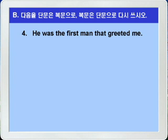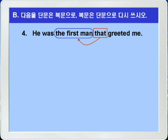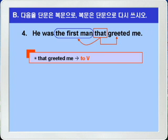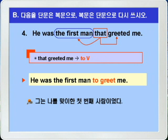4번. 'He was the first man that greeted me.' 그는 나를 맞이한 첫 번째 사람이었다. 여기 that은 the first man을 선행사로 하고, greeted의 주어 역할을 하는 주격 관계대명사입니다. 관계대명사 that이 이끄는 절 'that greeted me'를 투부정사로 표현하면, 'He was the first man to greet me.' 이렇게 하면 되겠습니다.